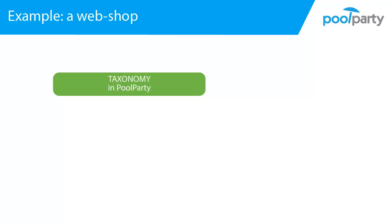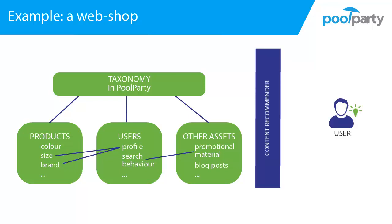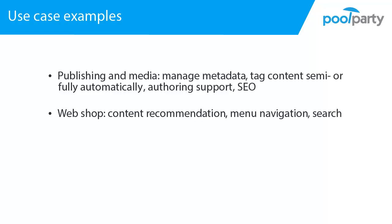Within a thesaurus, you can model all this information. You can create a knowledge model that structures your products and digital assets, model your users with their preferences and behaviors, and define relationships between your content and your users. With these defined relationships modeled in your taxonomy, you can build a content recommender that supplies each user with precisely the right products and promotional material based on their profile or search behavior. In PoolParty, it is easy to do this modeling and you create your knowledge model in a format that can be directly consumed by applications. You can also base your webshop menu navigation, your search, and your landing pages on the knowledge model in PoolParty. Taxonomies can also help a lot with search engine optimization of your webshop.